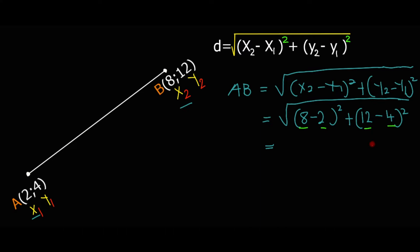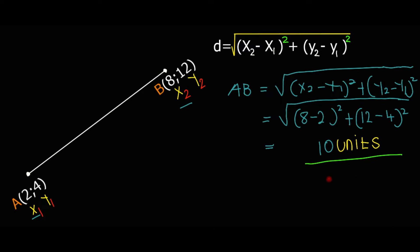Twelve minus four gives us eight, so we have eight squared. Now it's important to simplify the answer, especially in the exam. Also, always make sure to include the unit in your answer. The unit can be centimeters, meters, or kilometers — whichever units apply in the question.